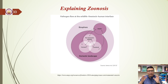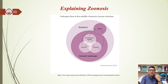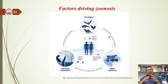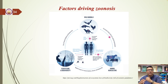Foodborne pathogens such as Salmonella and Listeria bacteria, which are transmitted from animal to human, produce another significant group of zoonotic illnesses. Environmental changes or ecological disturbances — such as agricultural intensification and human settlement or encroachment into forests and other ecosystems — are frequently related to the emergence of zoonotic illnesses.